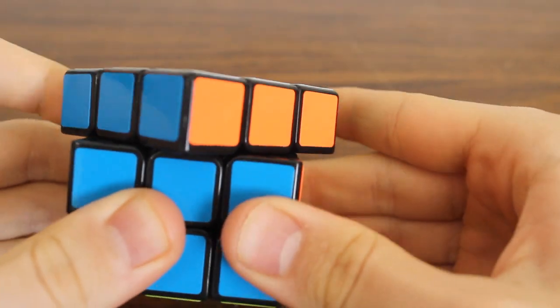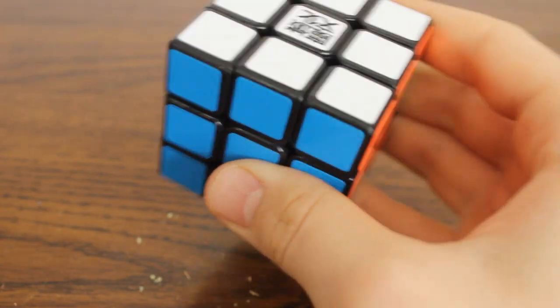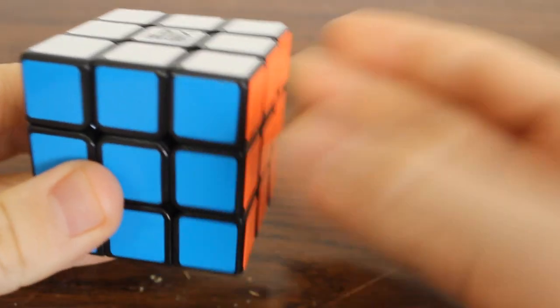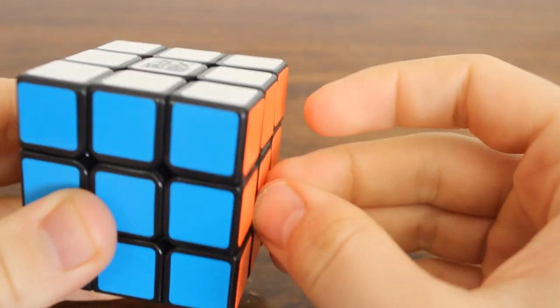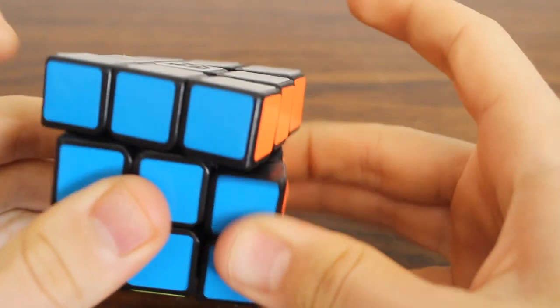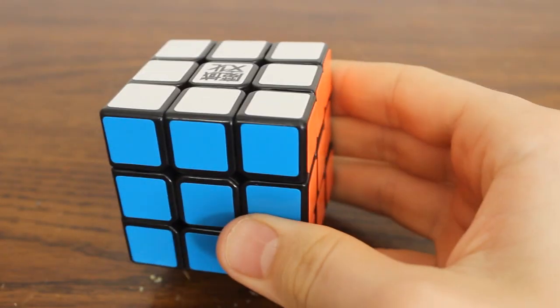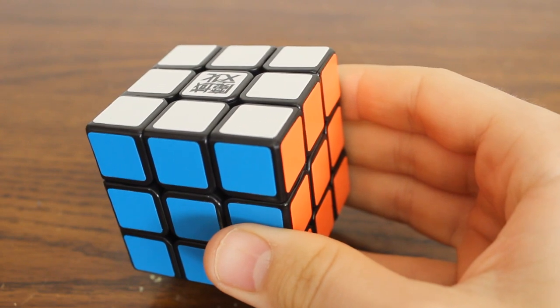With the tight tensions that I have it on, corner cutting isn't quite as good as its full potential. But it's still pretty nice. I haven't had any problems with locking up, so I haven't felt the need to loosen the tensions at all. And it cuts reverse very well, almost as well as it does regular. And it does the regular corner cutting at 45 degrees with no effort at all.